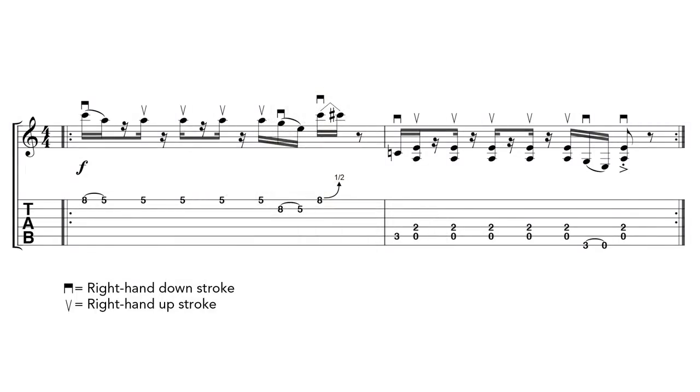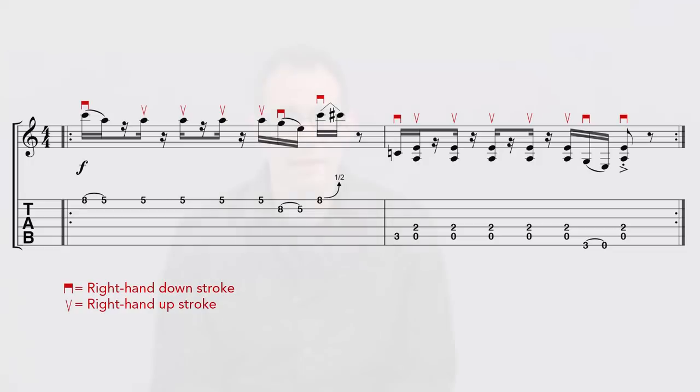Sometimes guitar tablature shows finger-picking and specific rhythms. Other times, tablature is shown only as chord charts above a vocal line or piano score, which don't indicate any rhythm or finger-picking — they can be picked, strummed, or played in any rhythm. Often accompanying chord charts are chord symbols, such as CM7 or a lowercase m for minor. For example, A with a lowercase m would be A minor. For more on chord symbols and how to name chords, see the section on chord symbol notation.